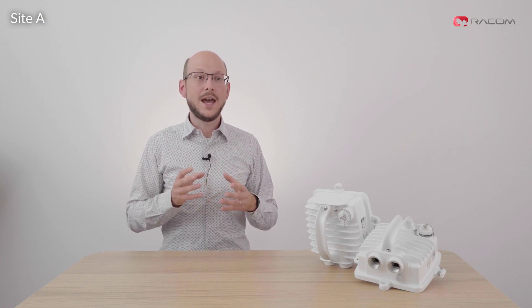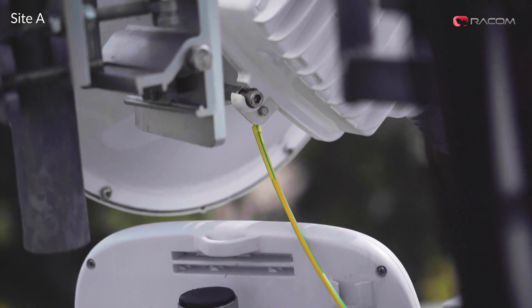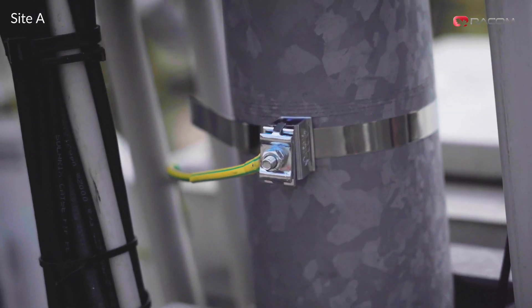Now we need to properly ground the unit to the antenna pole by connecting the grounding kit to the marked location on the ray unit and to the antenna pole itself.